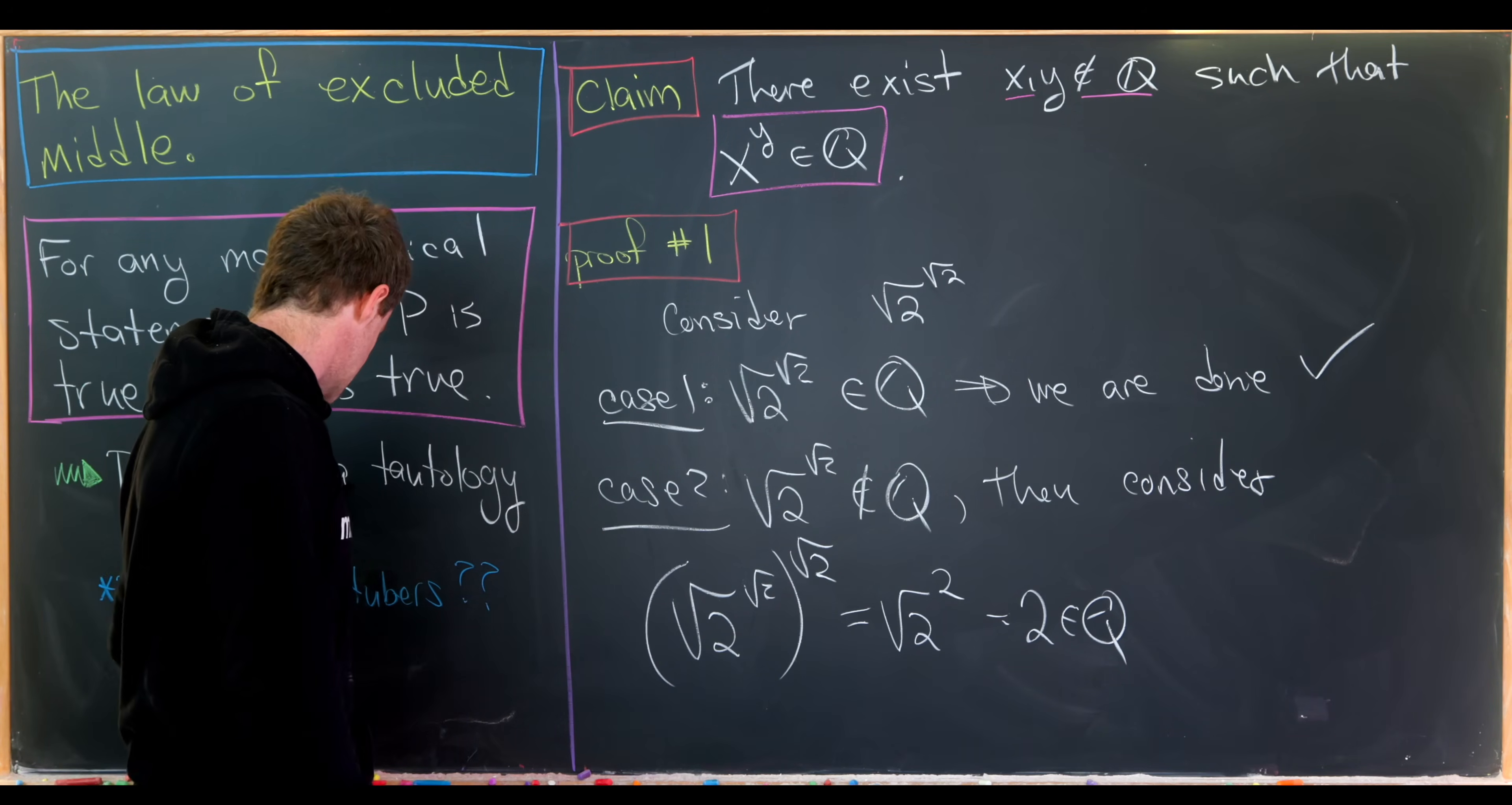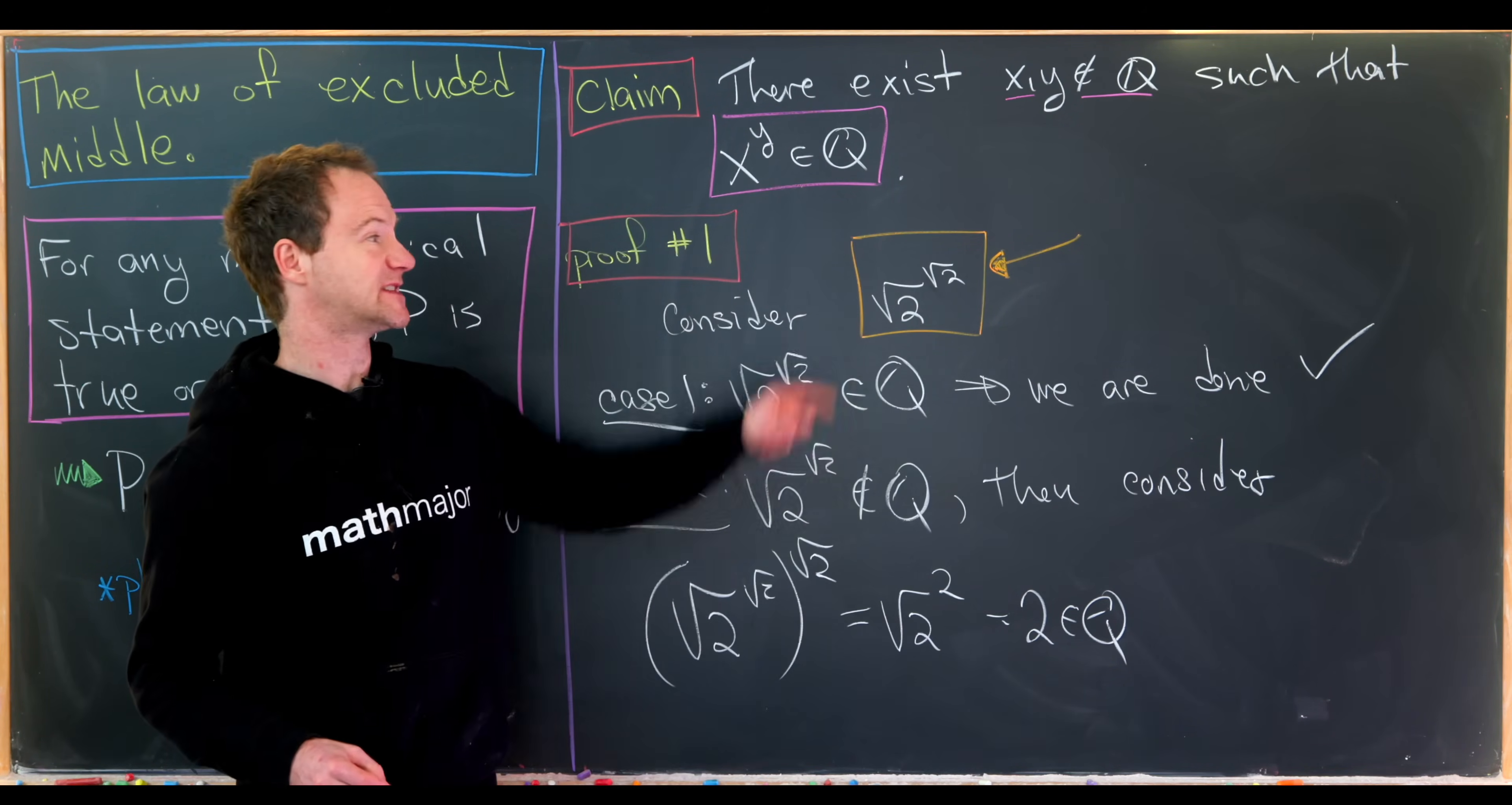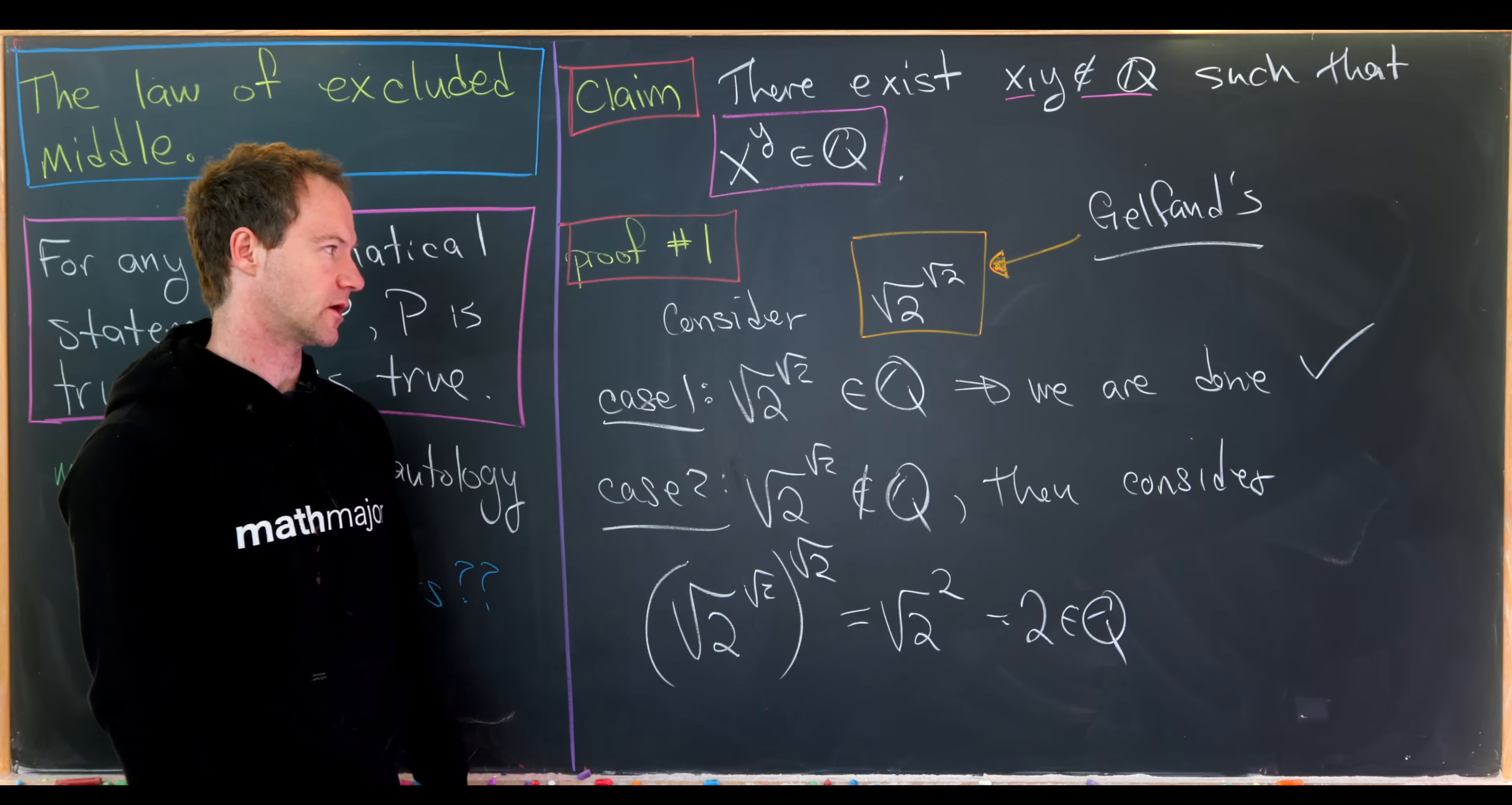That being said, maybe we don't from this proof, but humanity does because there is a much longer proof, which we won't do in this video that shows that this number is in fact irrational. This is known as Gelfand's constant. And like I said, this is known to be irrational, but the proof is quite hard.